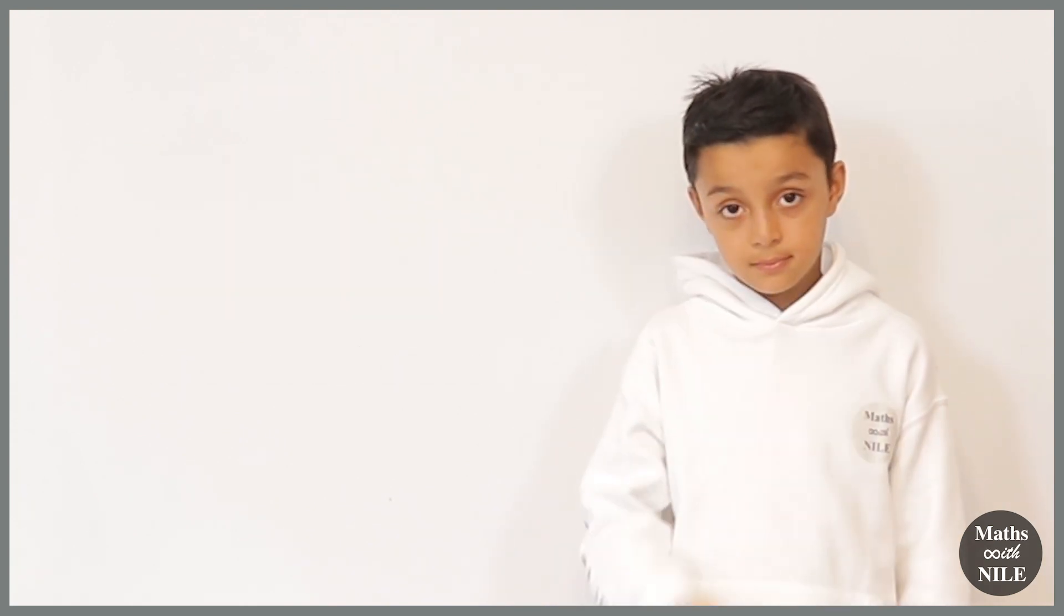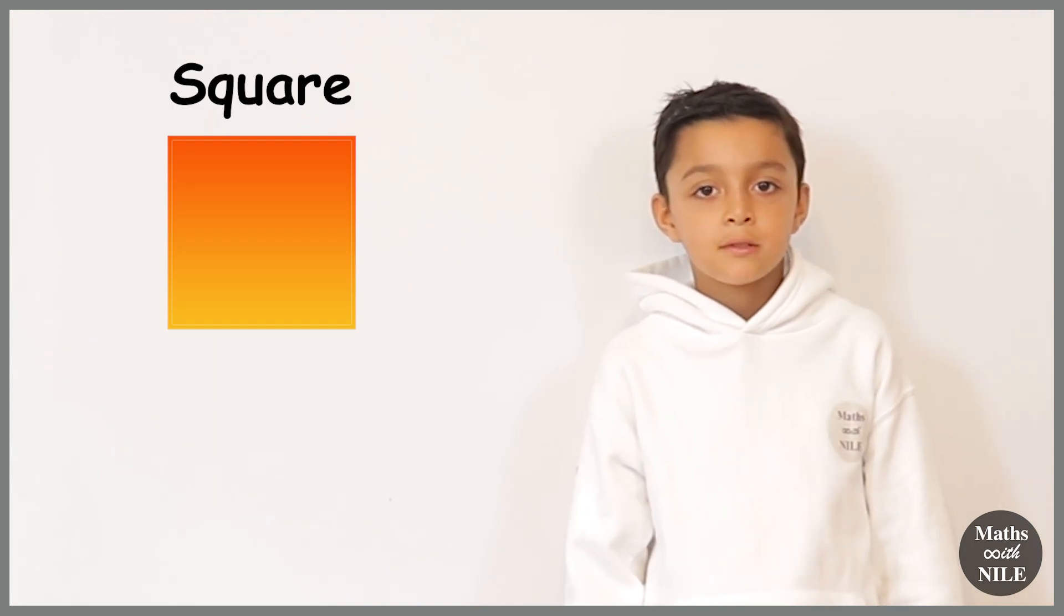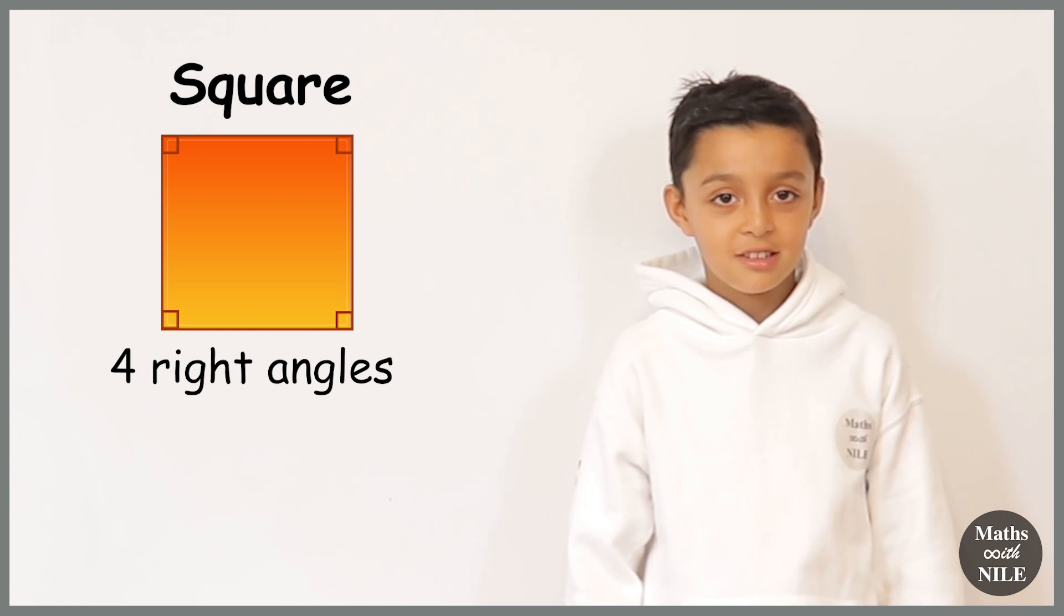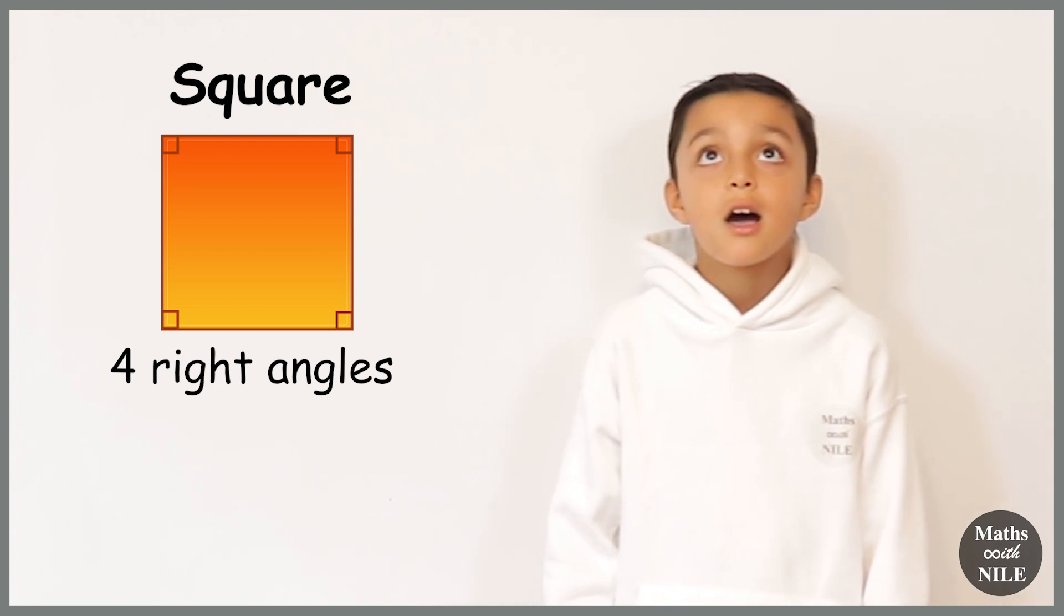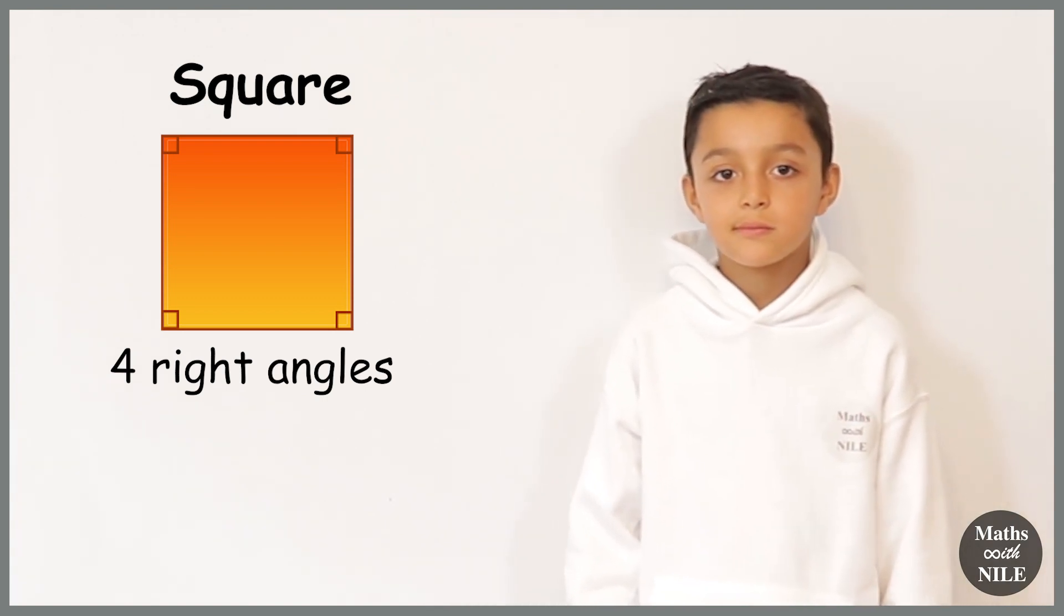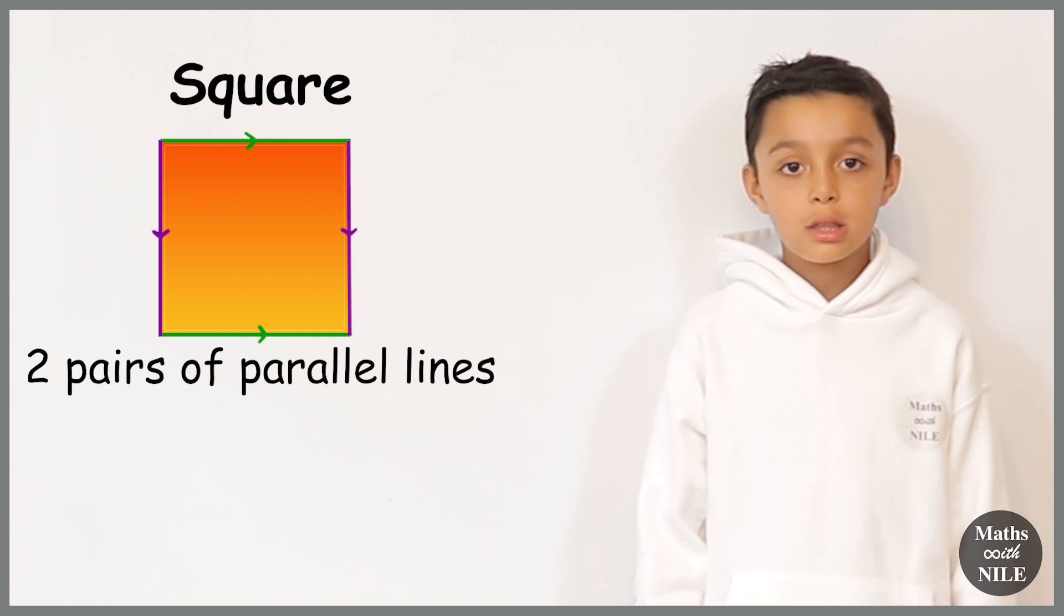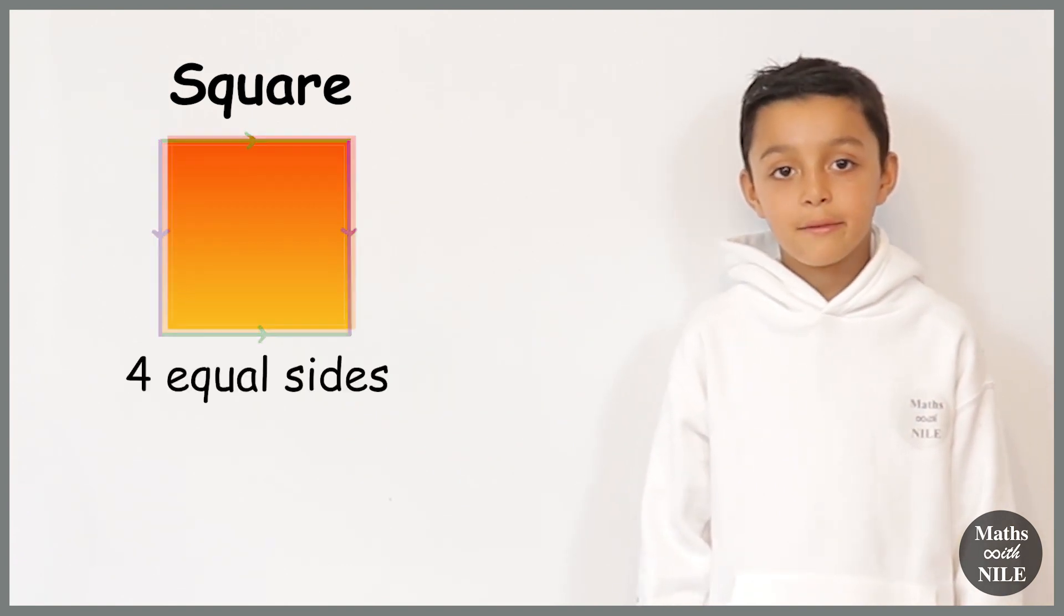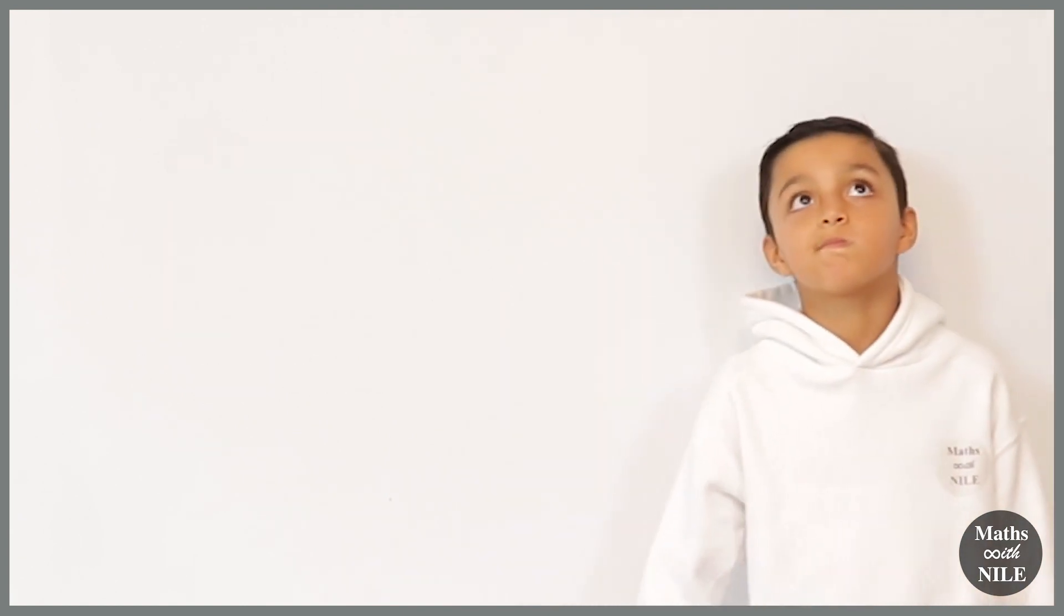What's another quadrilateral? A square. Okay, tell us about a square. Four 90 degree right angles. Four 90 degree angles, which are right angles. Good. What else? It has two pairs of parallel lines. Very good. The opposite sides are parallel. All of its sides are the same length. Very good. That's very important. And that's what makes it a square. Exactly.